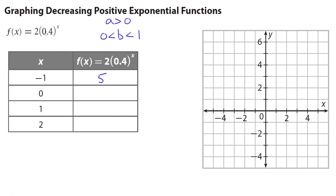Completing the table: when x is 0, anything to the 0 is 1, so 2 times 1 equals 2. When x is 1, 2 times 0.4 is 0.8. When x is 2, 2 times 0.4 squared is 0.32. Graphing: negative 1 comma 5 is right here; 0 comma 2 is our y-intercept; 1 comma 0.8 is just under the 1 line; and 2 comma 0.32 is below the halfway mark. This gives us our decreasing positive exponential curve.